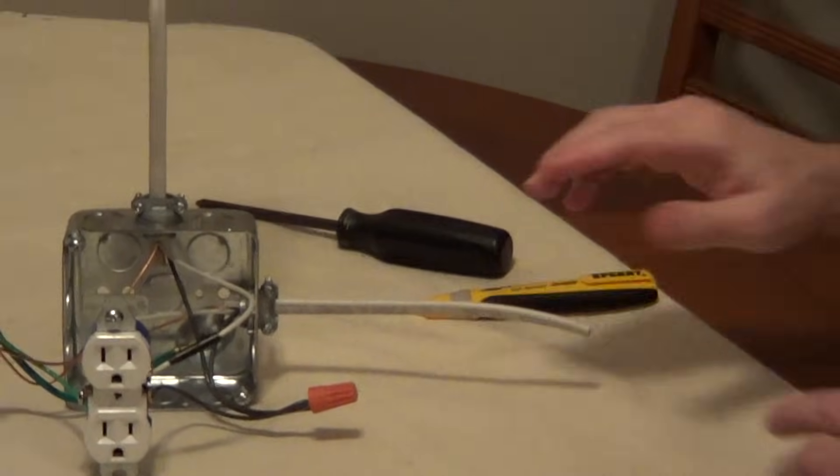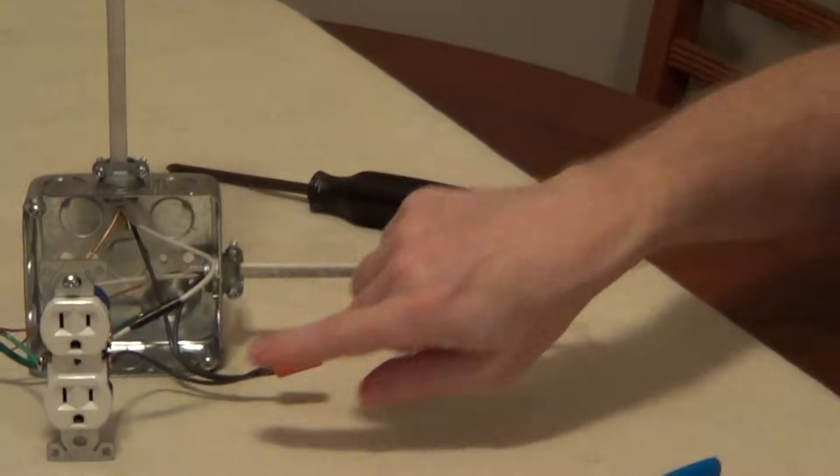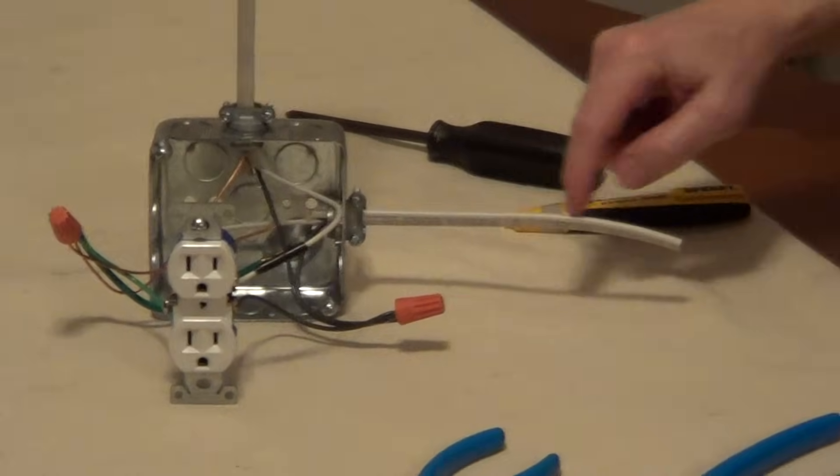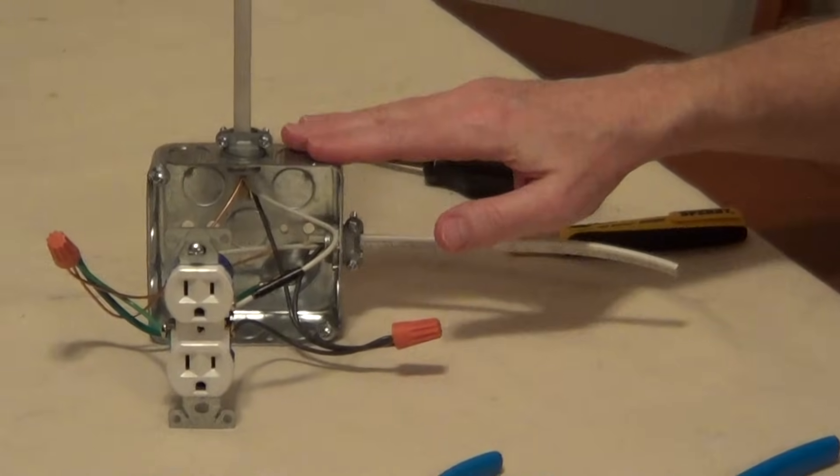So always turn off the power before you start. But a switched outlet has one side of the outlet always on. In this case, we've got a non-metallic two-wire cable coming into this box.